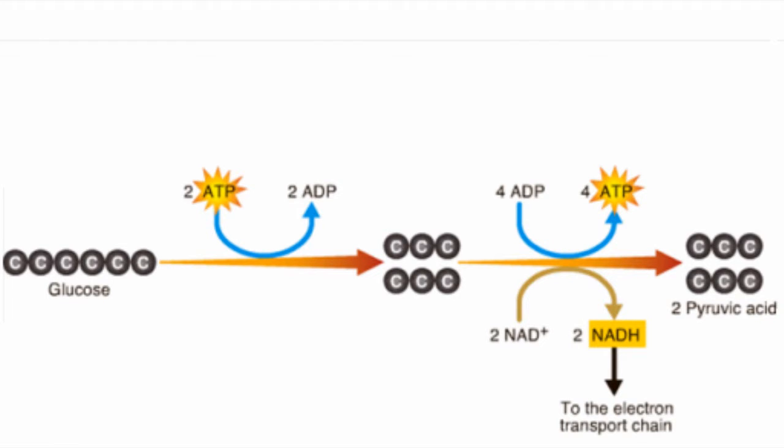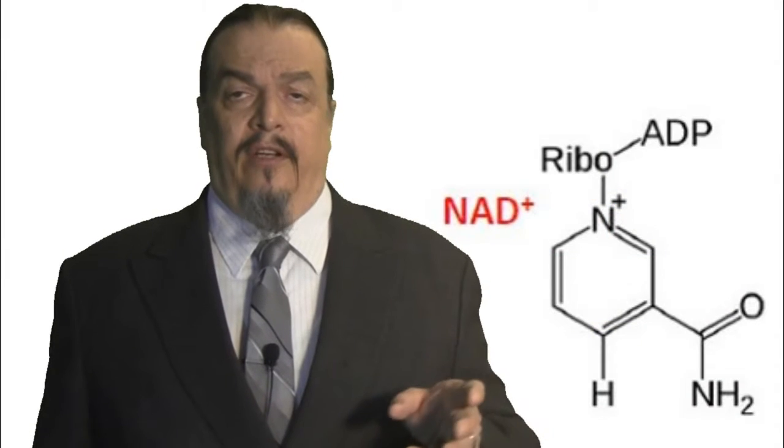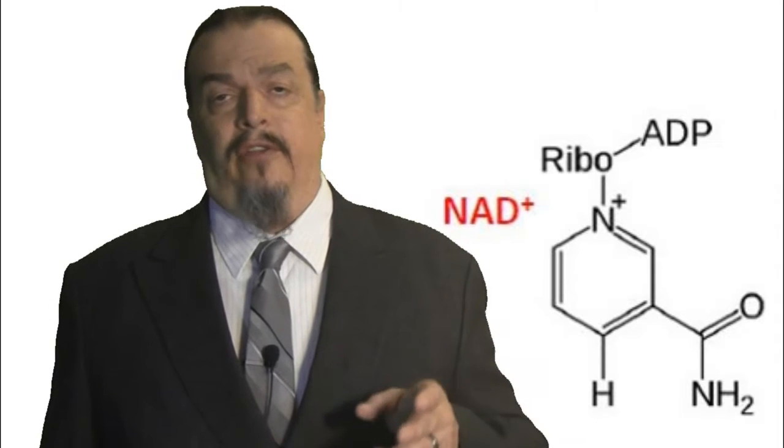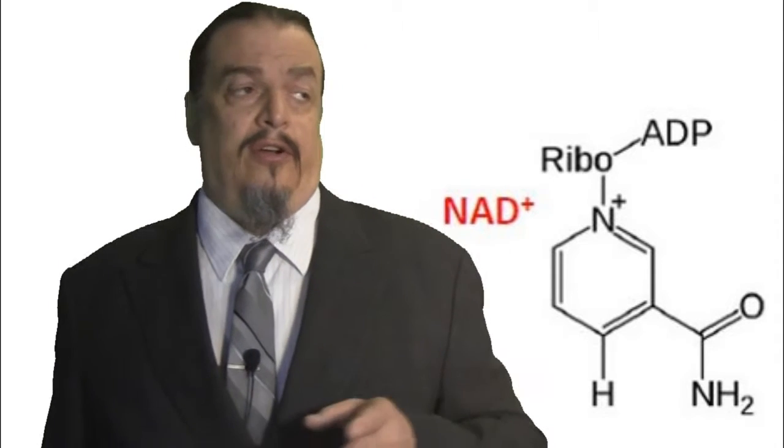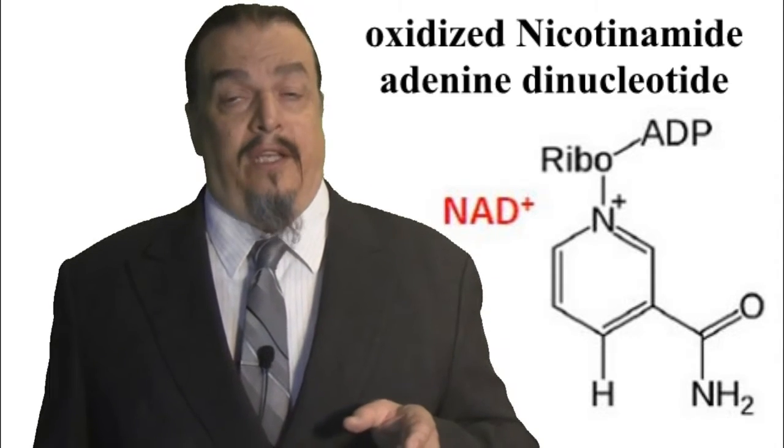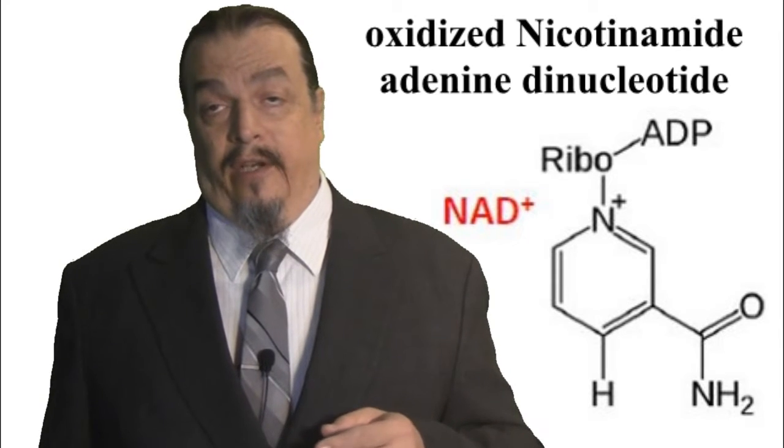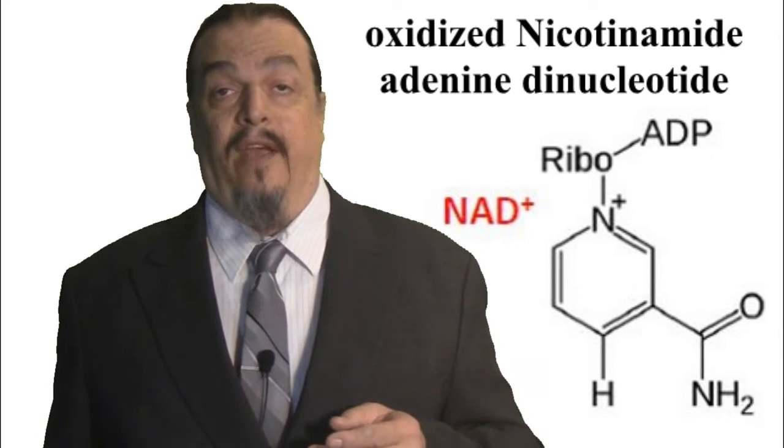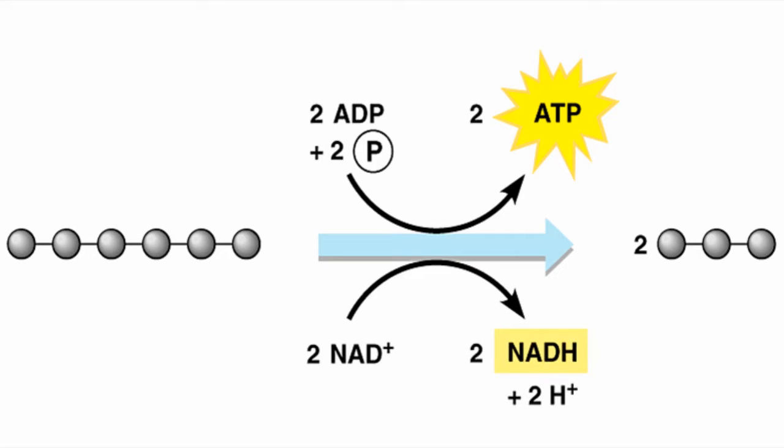Remember the glucose molecule has six carbon atoms. Splitting the molecule in half requires energy so we'll need to invest two ATPs to help create more ATPs and energy. As you can see two ADPs are left after that reaction and now there are two molecules that have three carbon atoms. The chemical reactions of glycolysis also removes four electrons and these are passed to an electron carrier called NAD plus or nicotinamide adenine dinucleotide. Try saying that five times fast.